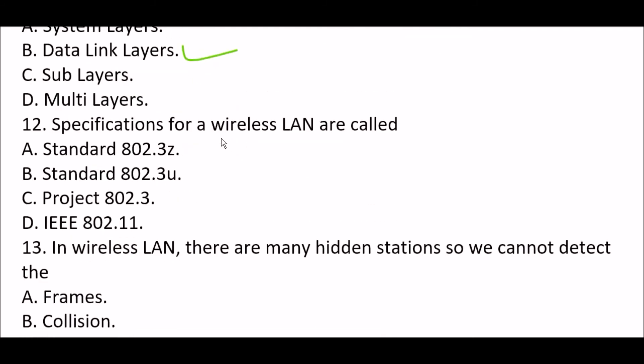Next question: Specifications for a wireless LAN are called blank. Option A: standard 802.3Z. Option B: standard 802.3U. Option C: project 802.3. Option D: IEEE 802.21. The right answer is Option D, IEEE 802.21. The specifications for a wireless LAN are called IEEE 802.21.